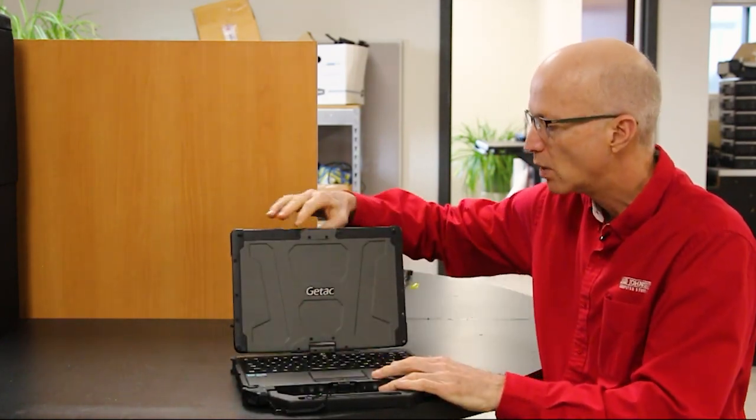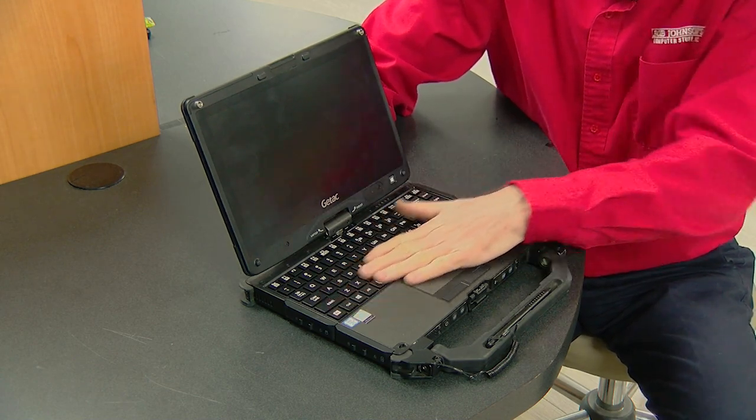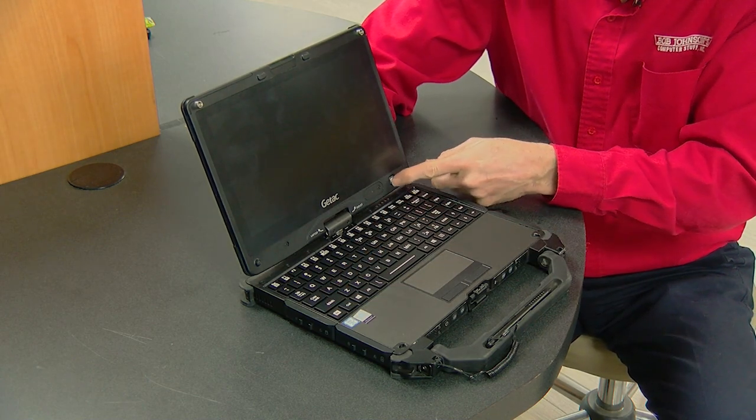But what are the top 10 features of this unit? Well, number 10, the one that I like really a lot, the number 10 feature I like is this Windows button just below the screen, so that I don't have to go looking for it on the keyboard. It's right here, right in front of me. That's a nice feature and I think they ought to institute that on all laptop models.